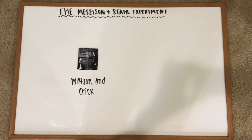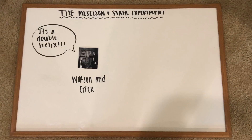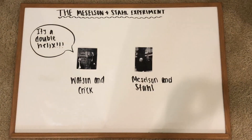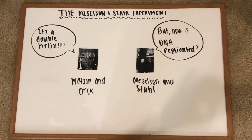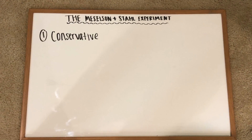After James Watson and Francis Crick had discovered the double helix structure of DNA, two scientists, Meselson and Stahl, were eager to discover which of the three hypotheses about DNA replication were true.